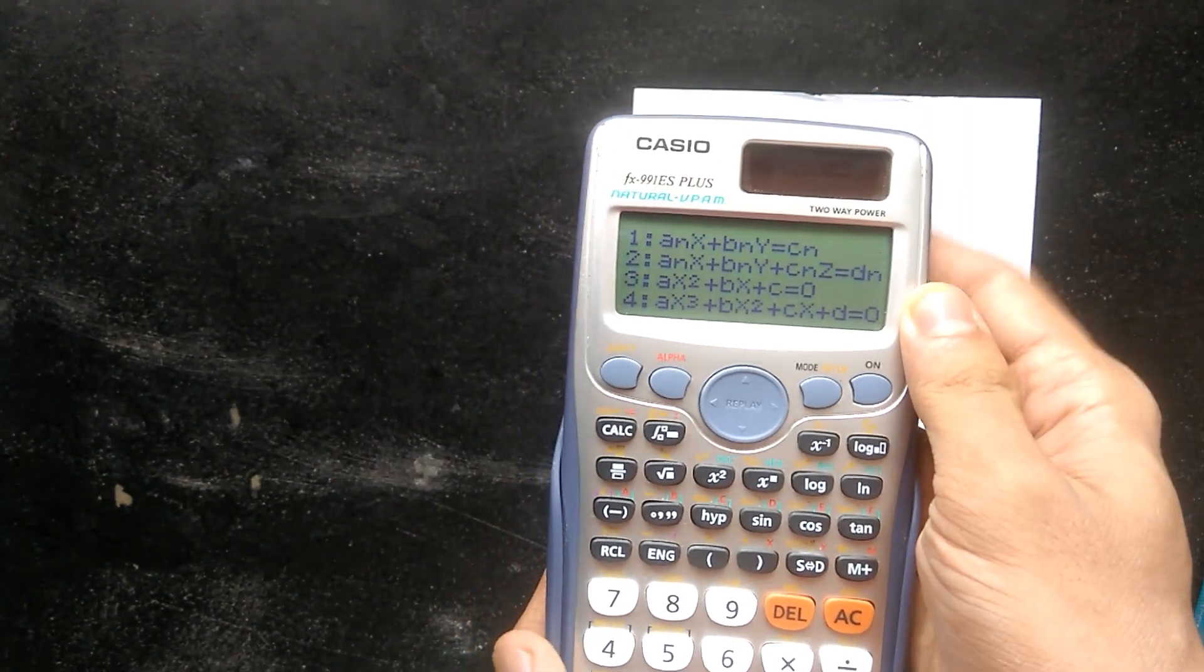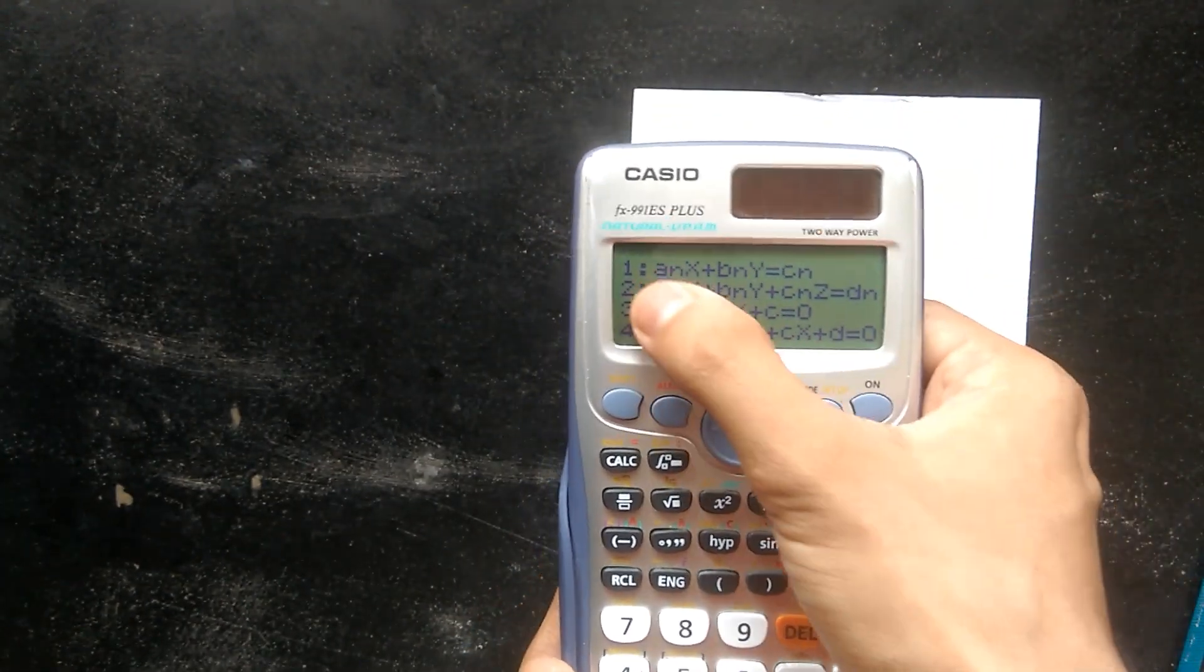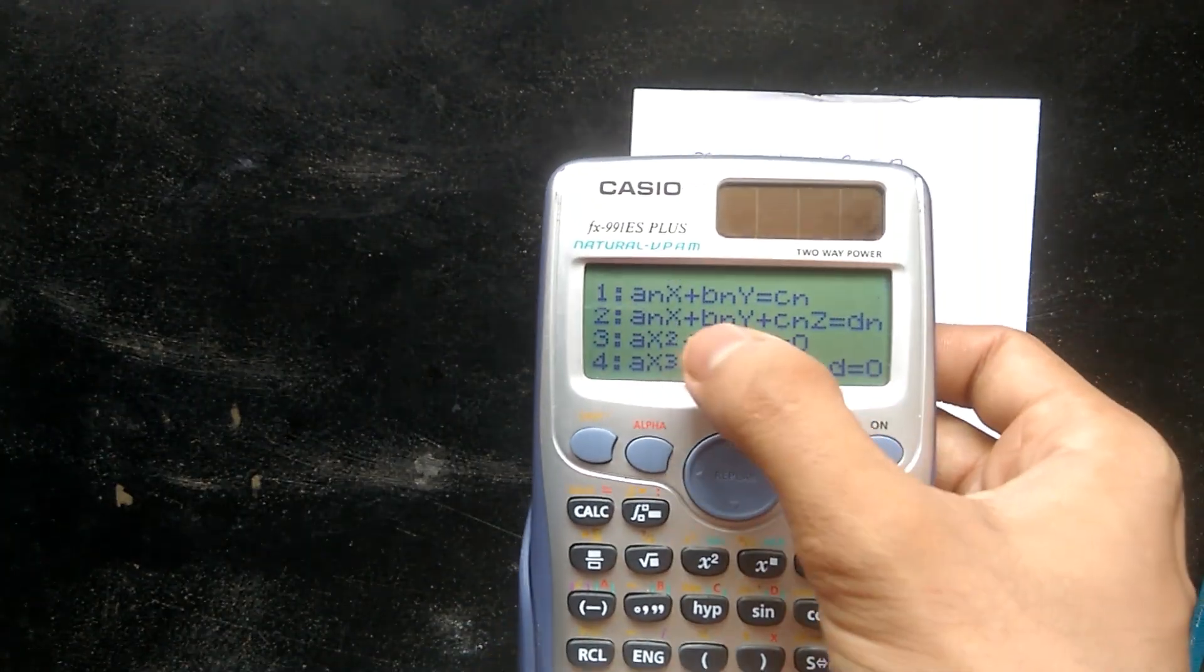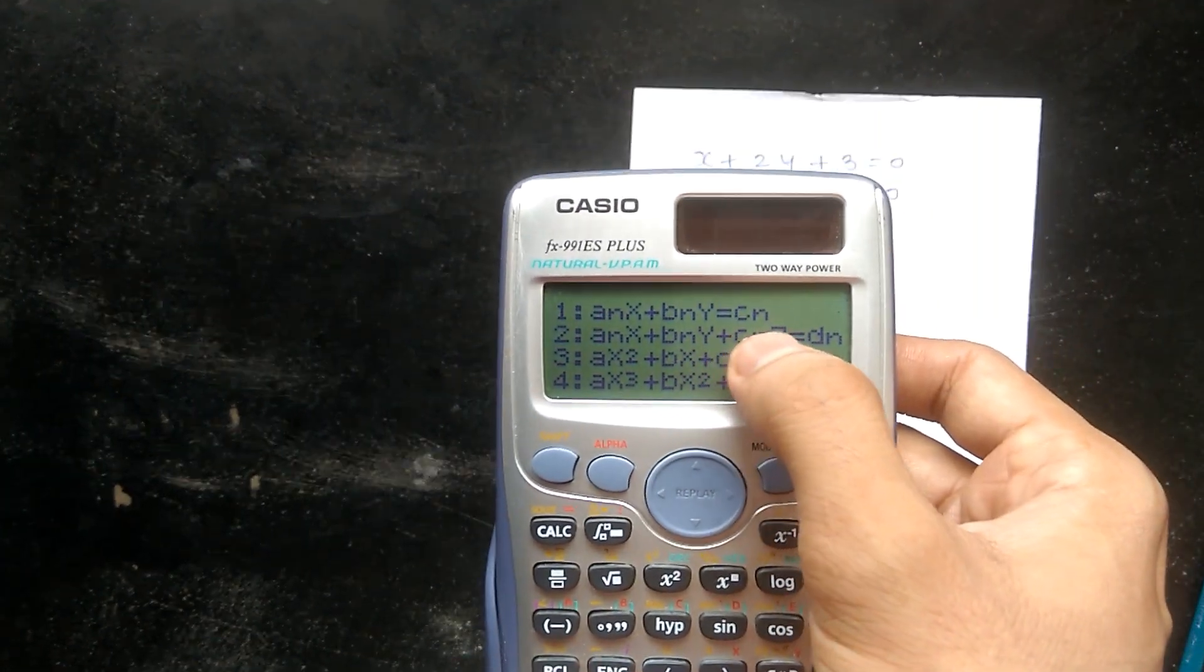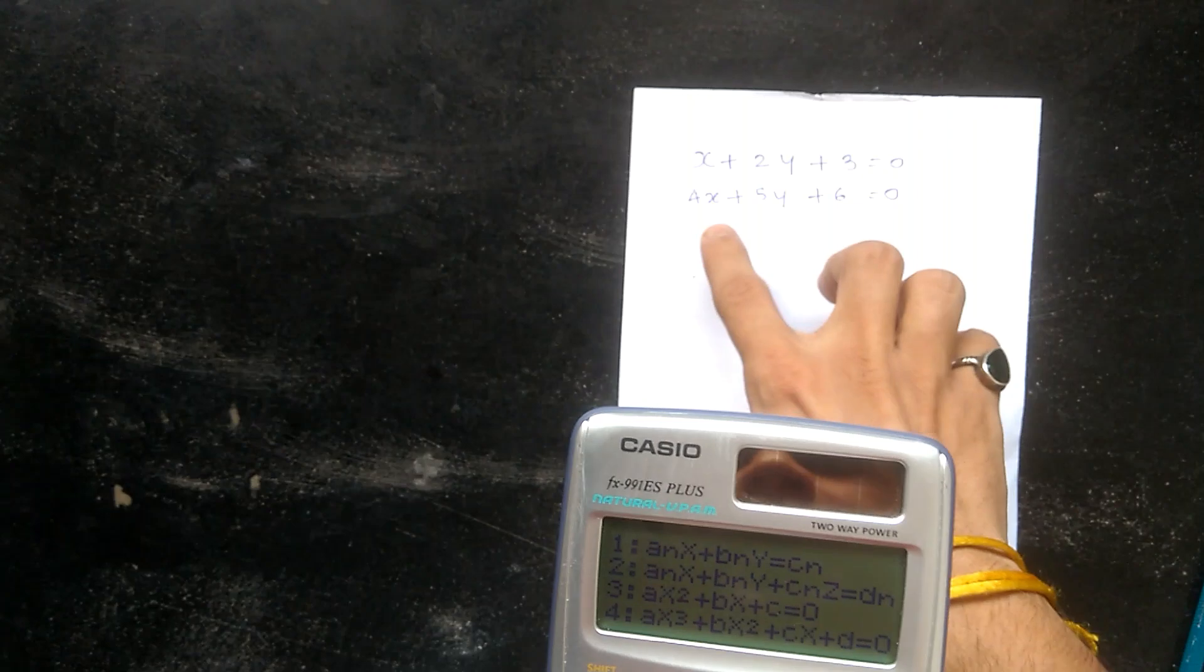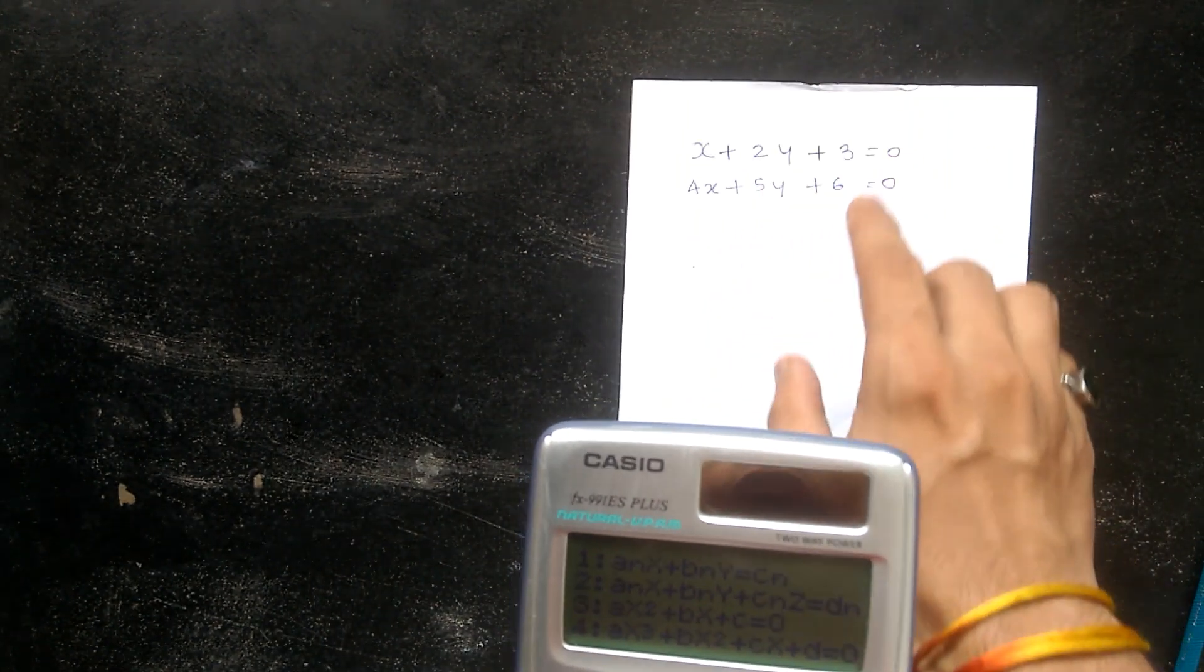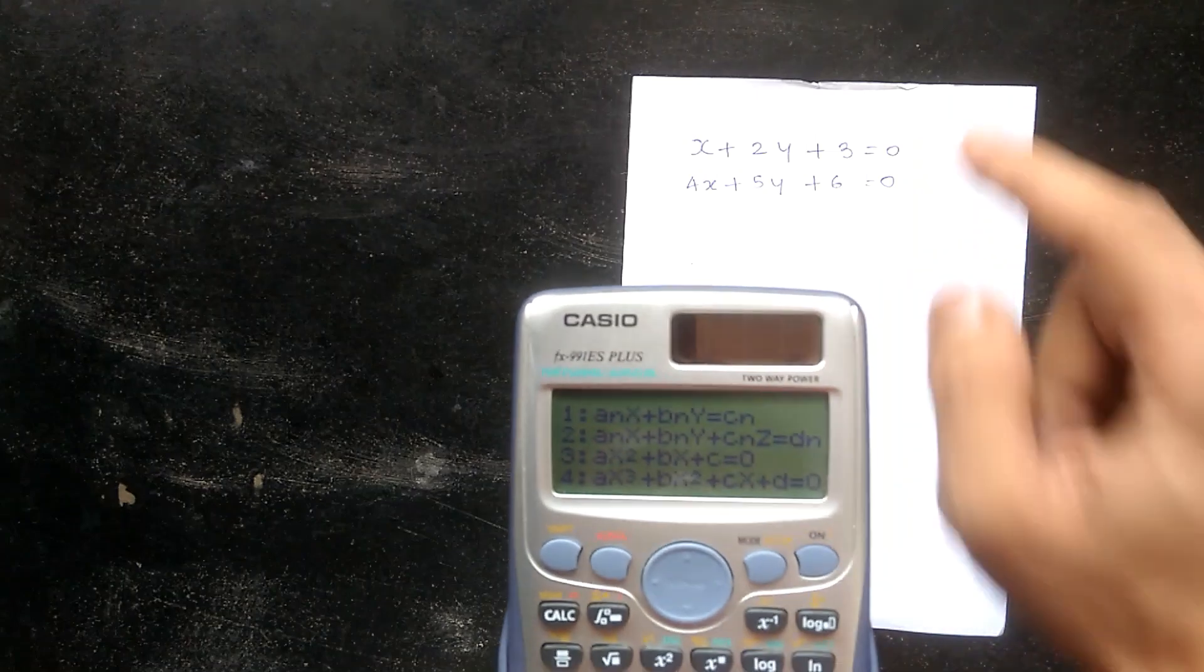We have equation number 1 to solve the linear equations, but you can see it is given in the format ax plus by is equal to c. But my equation is given as x plus 2y plus 3 is equal to 0. I have to convert this equation into this format, so let's convert it first.